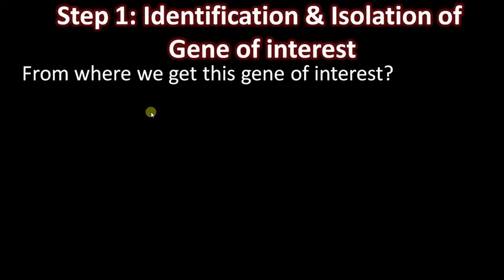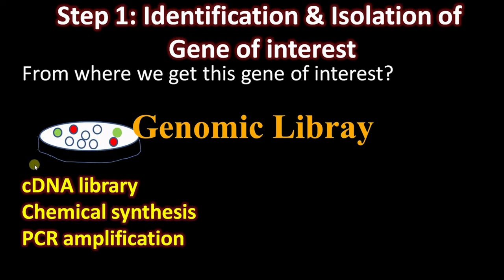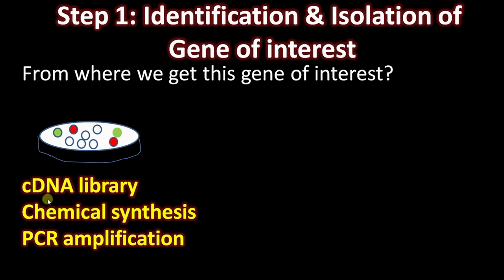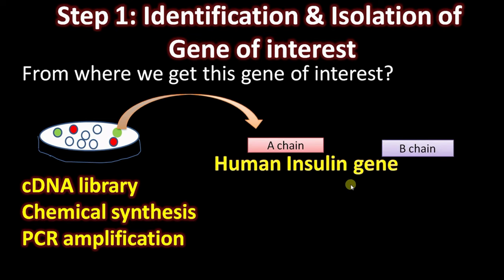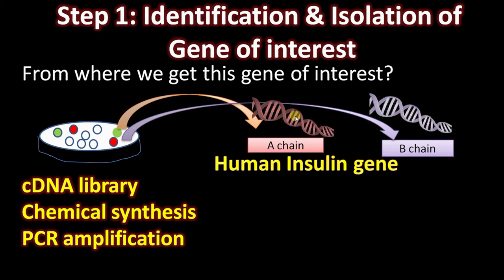Step one: identification and isolation of gene of interest. Sources include cDNA library, chemical synthesis, or PCR amplification. The cDNA library is widely used as it is devoid of introns, so the gene will be directly expressed inside a bacterial cell which doesn't have an intron removal mechanism. The most common method adopted for insulin production is chemical synthesis of A gene and B gene, since insulin is made up of two chains — A chain and B chain.